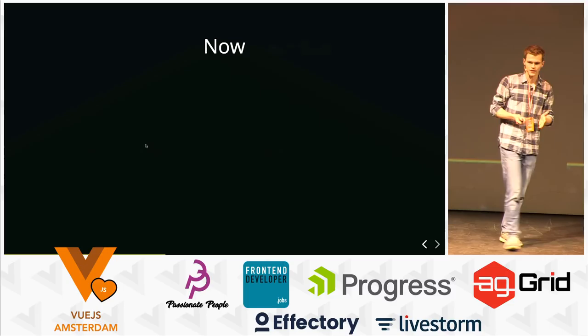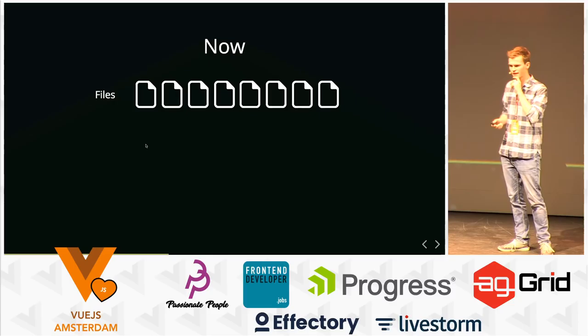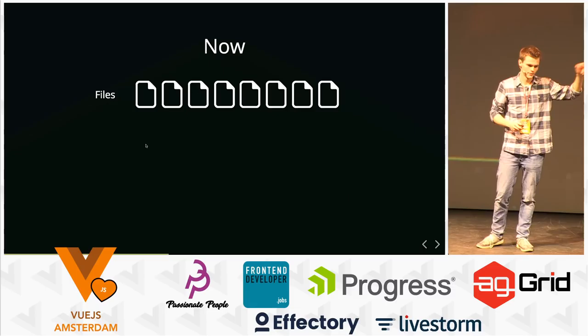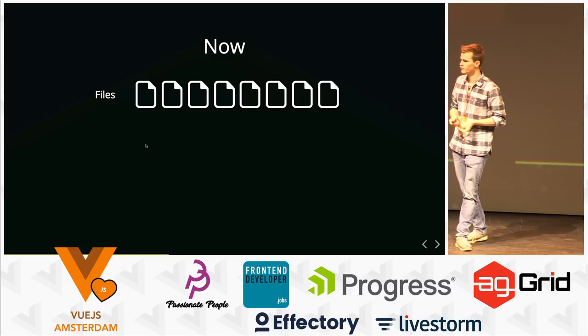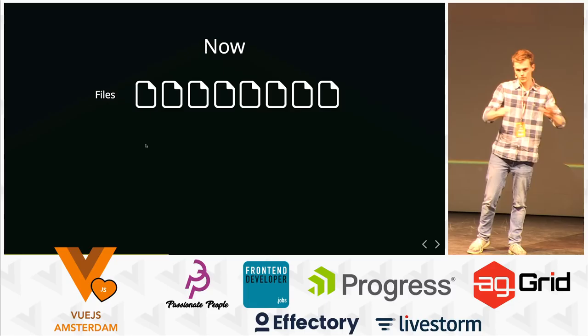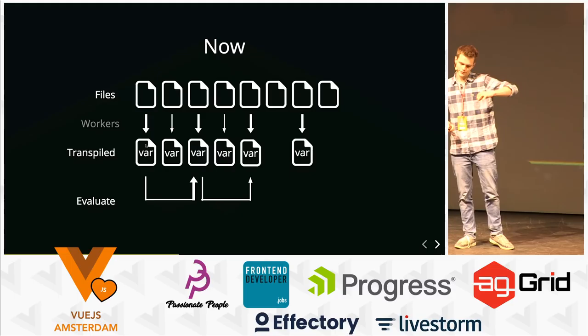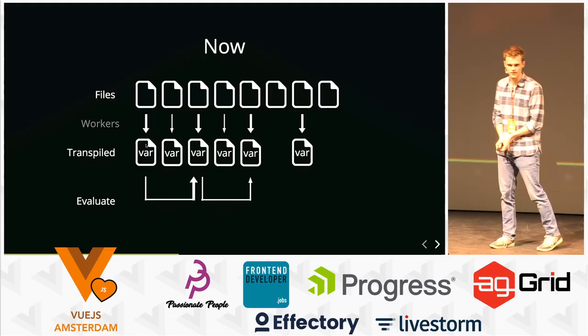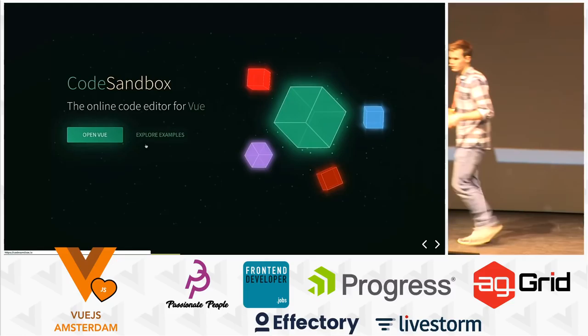Now we have a pretty advanced bundler and I'm pretty proud of it. By the way, I forgot to tell you — all bundling happens in the browser. The only thing our server does is send the necessary files to the client. If I have time left, I'll show CodeSandbox without an internet connection to prove the point. How it now works is we have a more global view of all the files, check which files are actually used by the application, transpile those with web workers, and then do eval again on the transpiled code. It's actually much faster than I expected.